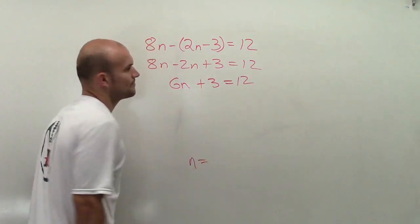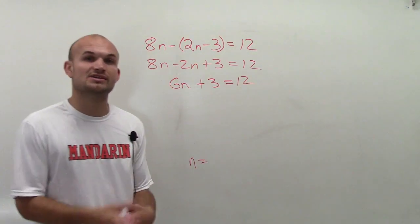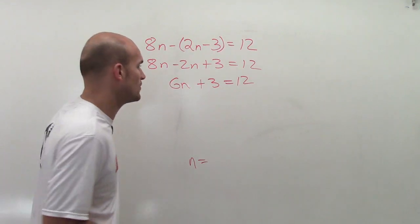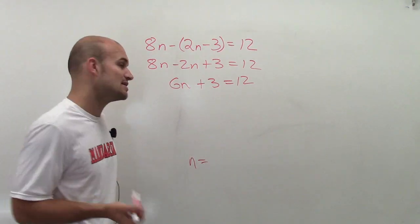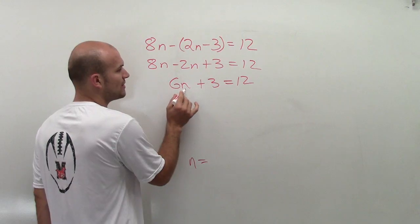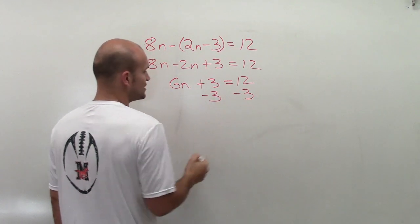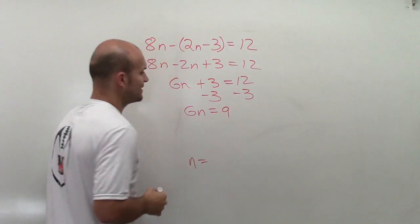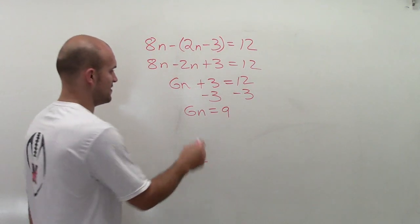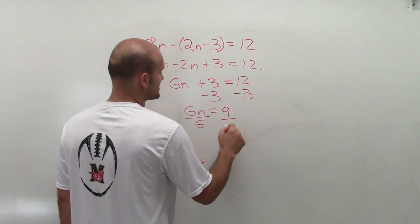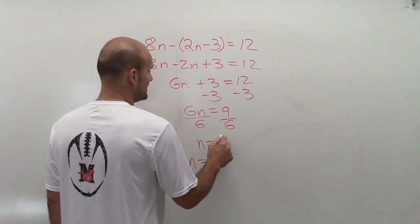Now we're at a two-step equation. I'm going to run through this quicker. Remember to undo our operations. First, I'm going to undo addition by using addition property of equality, so I have 6n equals 9. Then I divide by 6, therefore n equals